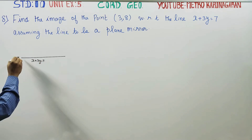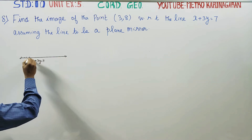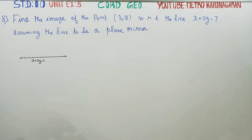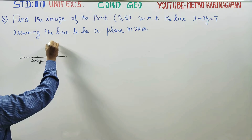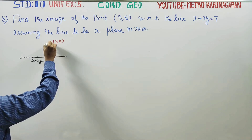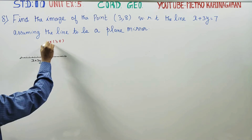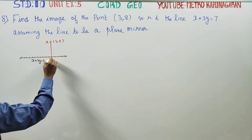This line is a mirror. We have the point (3, 8) and we need to find its image with respect to this mirror line.